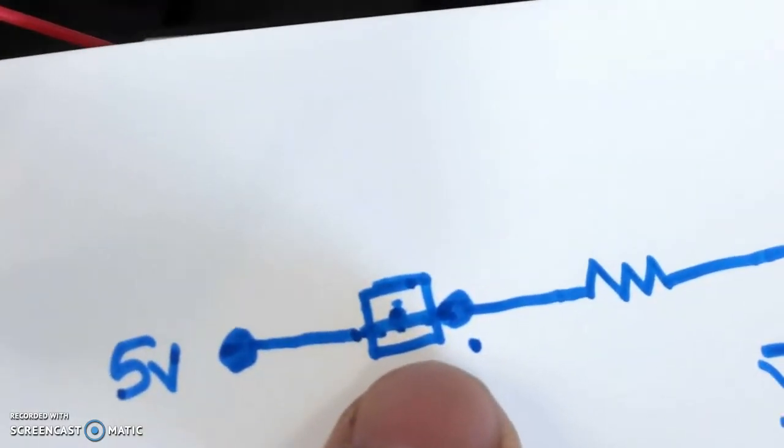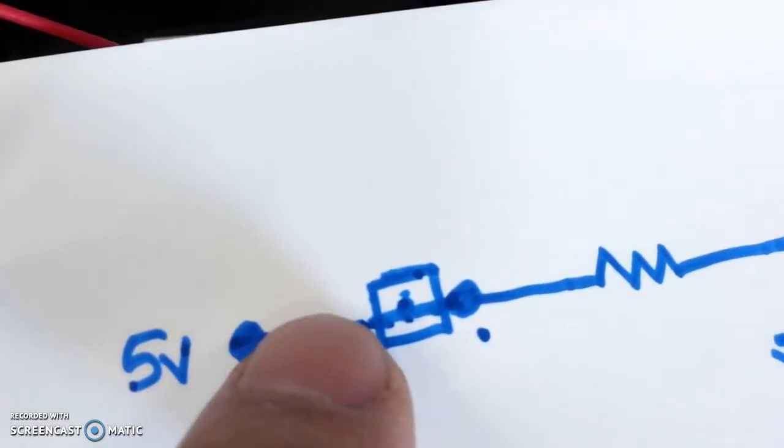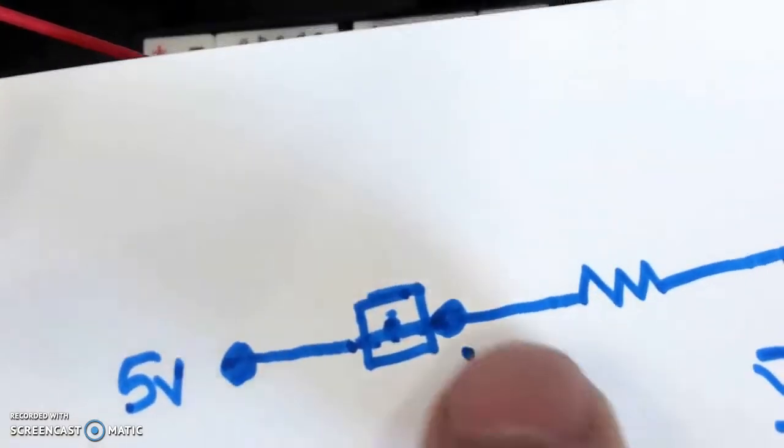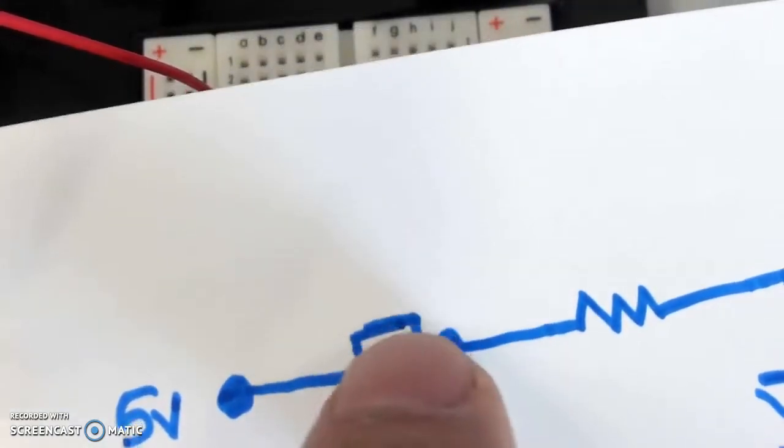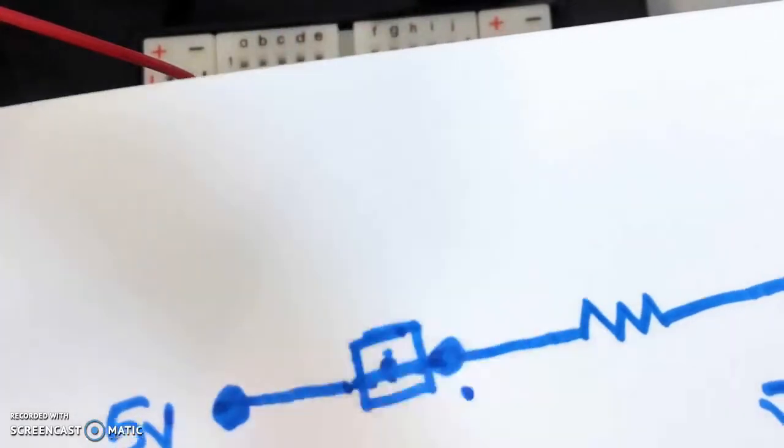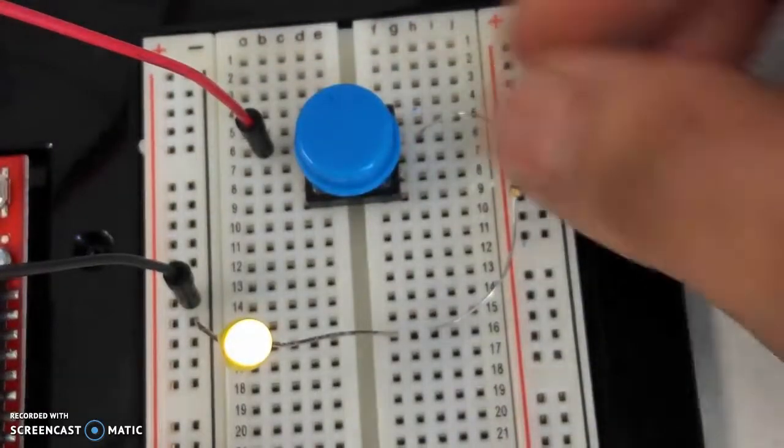That switch right here, we want to have 5V on one side of the switch and the resistor on the other side of the switch so that when I press the switch a connection is made. In order to make that happen the resistor needs to go on the bottom leg. It doesn't matter whether you do it on the left hand side or the right hand side.